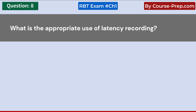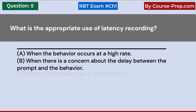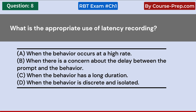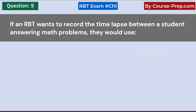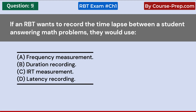What is the appropriate use of latency recording? A. When the behavior occurs at a high rate. B. When there is a concern about the delay between the prompt and the behavior. C. When the behavior has a long duration. D. When the behavior is discrete and isolated. Answer B: When there is a concern about the delay between the prompt and the behavior. If an RBT wants to record the time-lapse between a student answering math problems, they would use: A. Frequency measurement. B. Duration recording. C. IRT measurement. D. Latency recording. Answer C: IRT measurement.